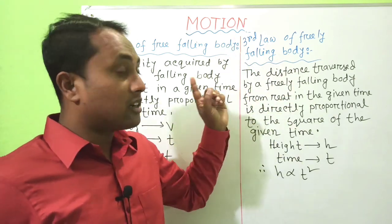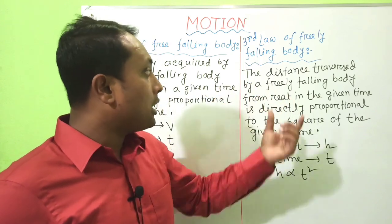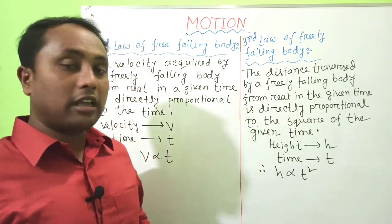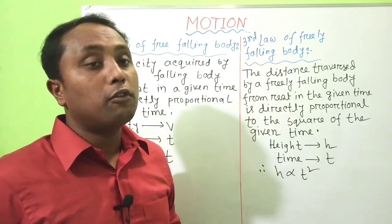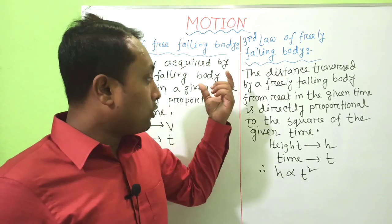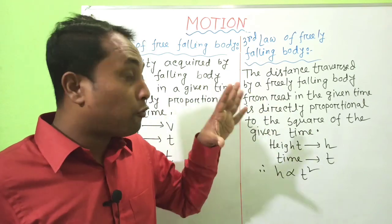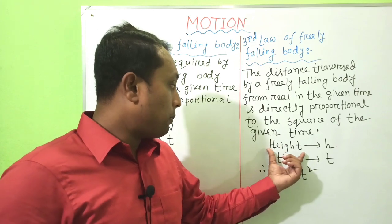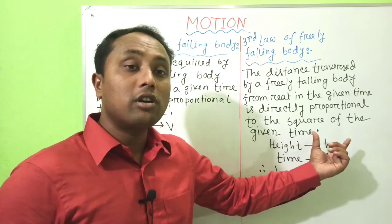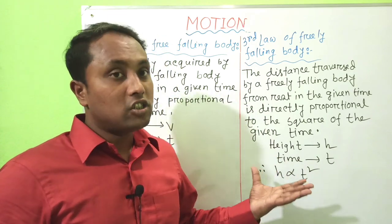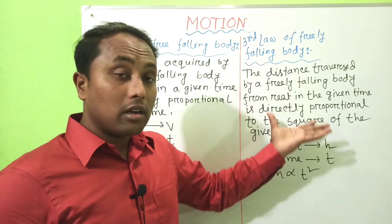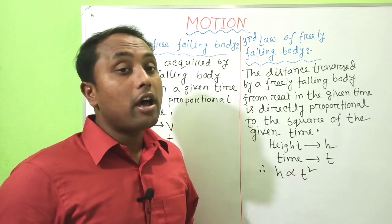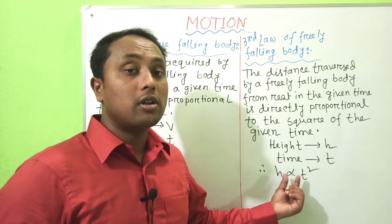The Third Law of Freely Falling Body states: the distance traversed by a freely falling body from rest in a given time is directly proportional to the square of the given time. For a freely falling body, we consider the distance as height h, and the given time as t, so we write: h ∝ t².